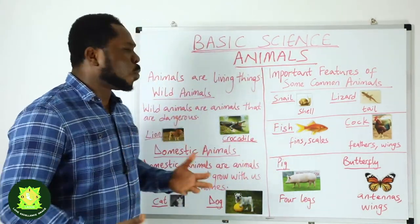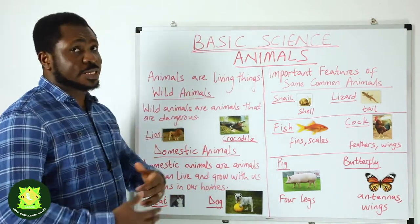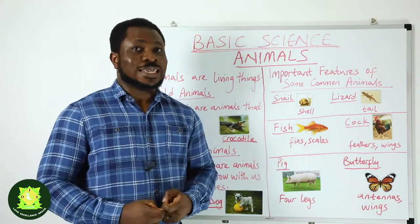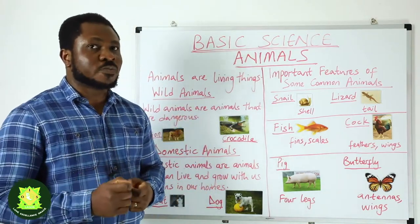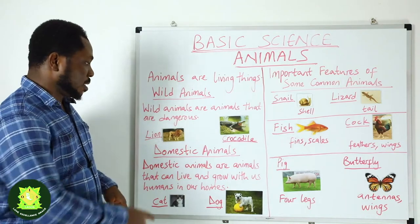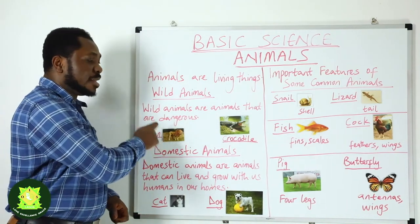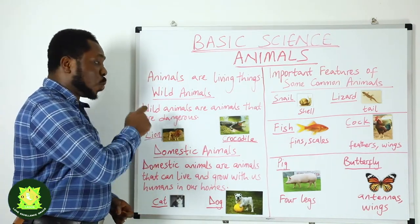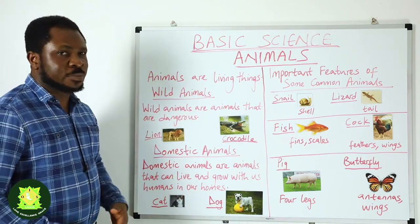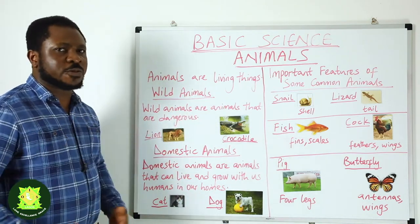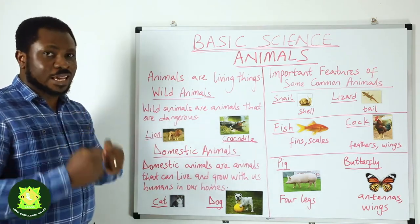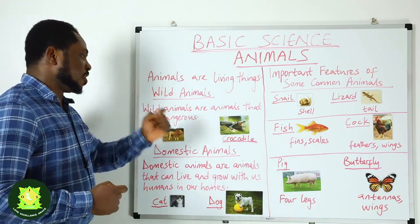We have wild animals and domestic animals. Wild animals are animals that are dangerous — they can't be kept in the house. A good example of wild animals is the lion. The crocodile is also a wild animal. We have different types of wild animals: we have tigers, elephants — they cannot be kept in the house because they are dangerous.